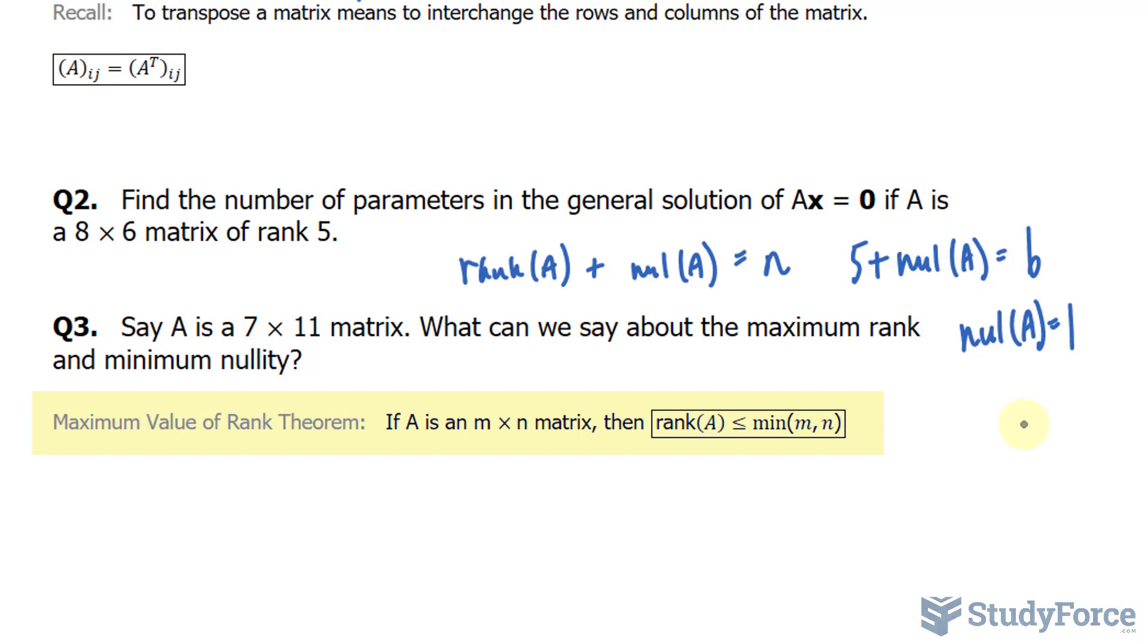So with that being said, the maximum rank can be 7, because we have 7 rows. The max rank of our matrix A can be 7.